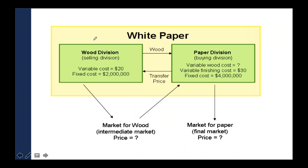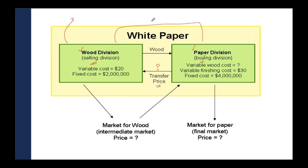Now, what price should be fixed? Say another example: we have a wood division and a paper division. Obviously the paper division has to buy wood from the wood division. The wood division also sells wood to external customers. Besides this, the wood division is the selling division to the paper division, and the paper division is the buying division. Wood will be transferred to the paper division at a price called transfer price — the price transferred by the wood division to the paper division within the same group company. It is called transfer price.